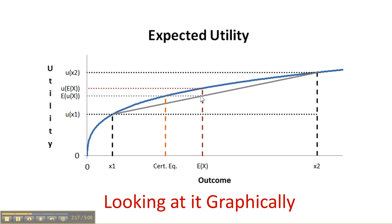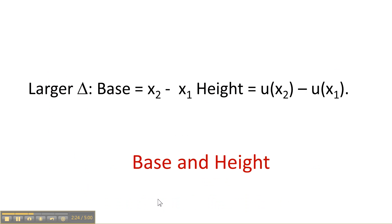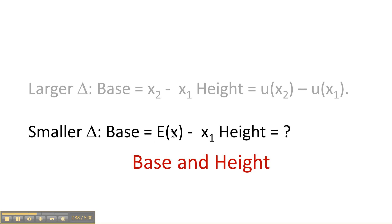And we draw this chord between the two points on the function. And what we want to show is that this is the expected utility of x. So the larger triangle has base x2 minus x1, the difference between the two values, and the height is u of x2 minus u of x1, the difference in the utilities. The smaller triangle has base expectation of x minus x1, and what we want to do is determine the height of that smaller triangle.